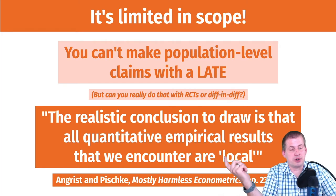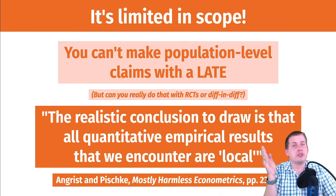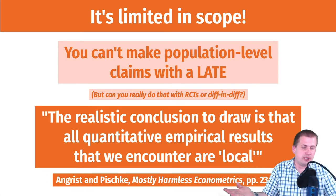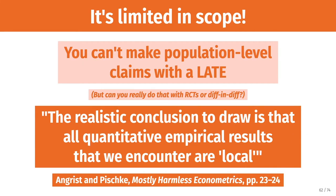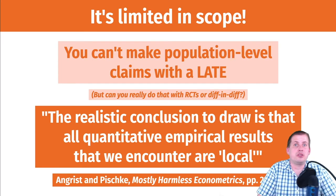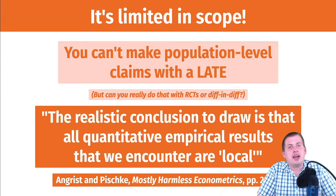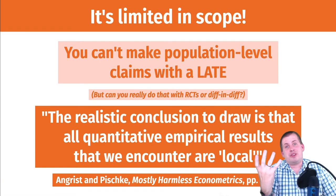Angrist and Pischke, who wrote your Mastering Metrics book — their first book, which is more technical but still really helpful and accessible, called Mostly Harmless Econometrics — make this argument that all quantitative empirical results we encounter, whether through RCTs, diff-and-diff, regression discontinuity, or regression with DAGs using inverse probability weighting, everything we're doing is still essentially local. The only way it's going to be a global population level effect is if we have perfect external validity, which is rarely the case. So don't let the fact that regression discontinuity only shows you a local average treatment effect scare you away, because everything is essentially a local average treatment effect in the end. With regression discontinuity it's just more specifically local — it's just the people in your bandwidth.